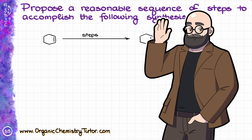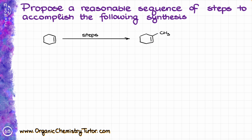Hello everyone, Victor here, your organic chemistry tutor. Today I want to look at this synthesis where we are starting with cyclohexene and we are going to be adding a methyl group onto our double bond. Of course, if there was a reaction where we could grab a methyl group and add it directly to a double bond, our conversation would be quite short, but unfortunately there is no reaction like that, so we'll have to go back to our retrosynthetic analysis.